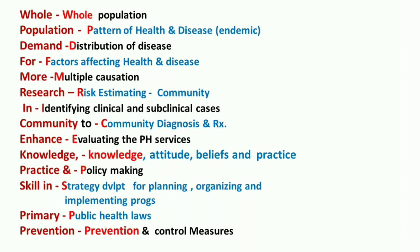O stands for pattern of health and disease — especially in endemic areas with endemic diseases. Research in community health nursing helps to identify the different patterns of health and disease among the people. D stands for distribution of diseases — research in community nursing helps to identify the distribution of disease among the population in the community.